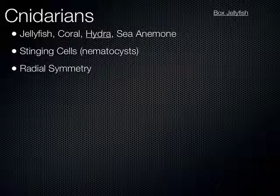So what's a characteristic of these cnidarians? When I say jellyfish, what do you think of? Stinging — because these cnidarians have stinging cells. They're called nematocysts, and they're generally in the tentacles. They're cells that release and enter the skin of their prey, injecting a venom that generally immobilizes and kills the prey so that the cnidarian can eat it.